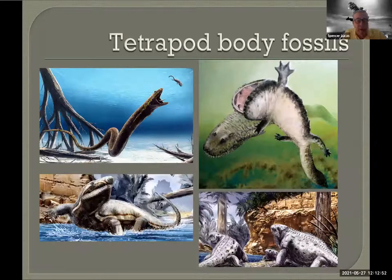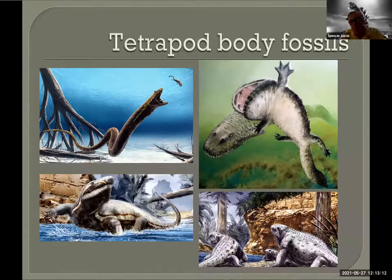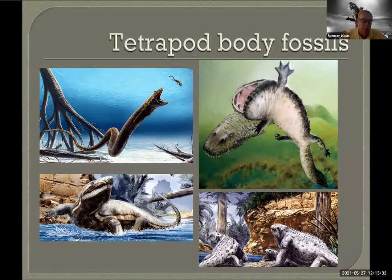The biggest thing I want you to take home from my talk is again this big bias in the record. A lot of these aquatic animals are overrepresented in the Westphalian — they're the coal swamp denizens we know a lot about. When we go into the later Pennsylvanian, we get more terrestrial animals. The aquatics continue, but what isn't in the Westphalian is a lot of these terrestrial tetrapods.